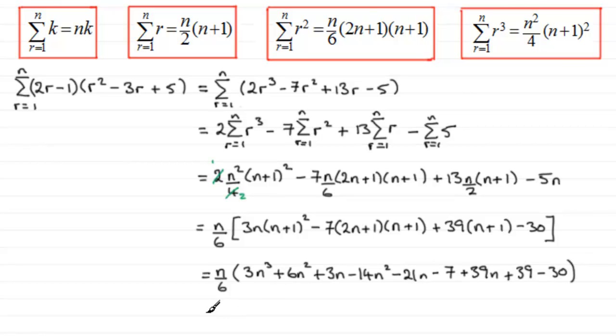So if I group my terms in this bracket here together, I've got one cubed term there, so that's 3n cubed. Grouped together, the n squared terms, I'm going to find that I've got minus 8n squared. And then the n terms: 3n minus 21n plus 39n, that comes to 21n. And then finally, I've got the constants: minus 7 plus 39 minus 30, that comes to plus 2.